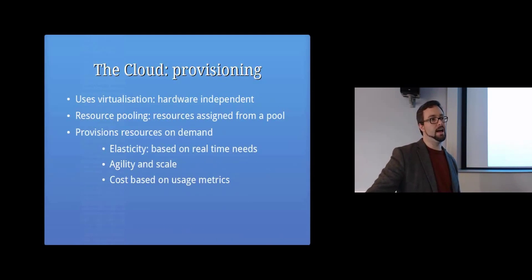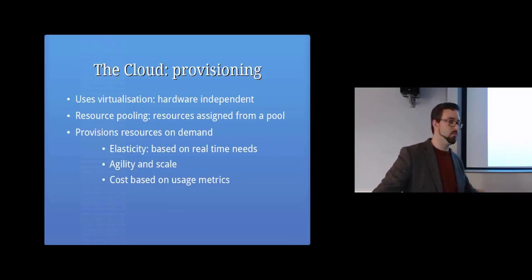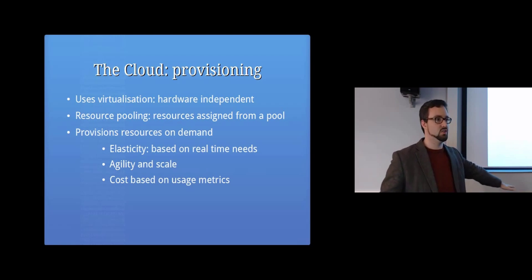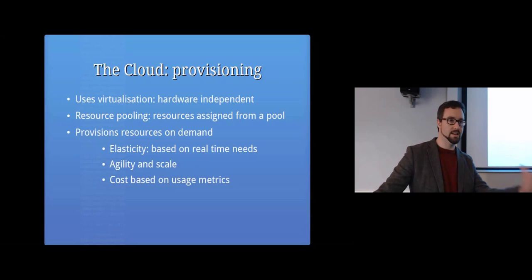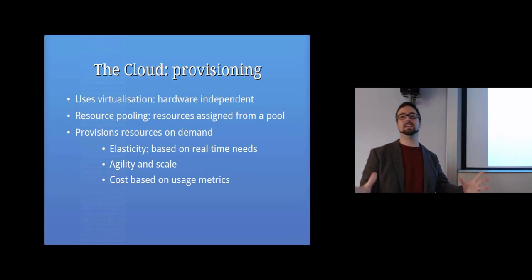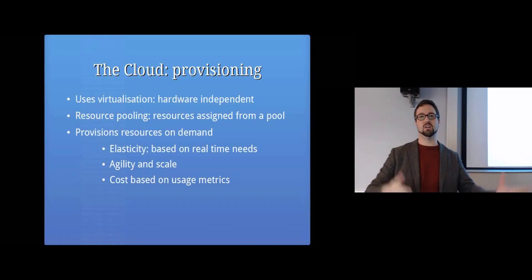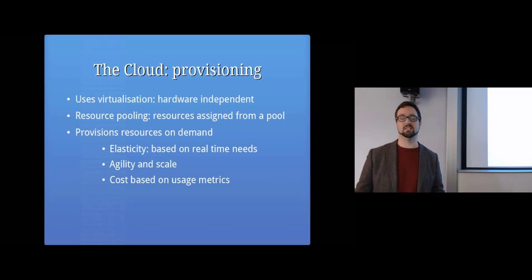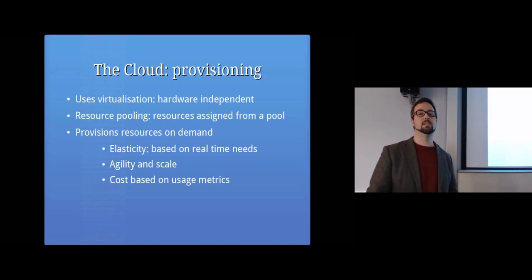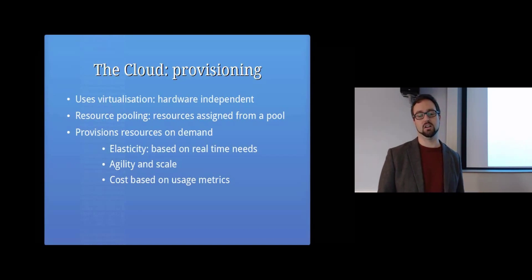Cloud computing is powerful because of virtualization - it's not dependent on specific hardware, it runs on top of it. It usually has resource pooling where massive amounts of servers are available, and your VM uses available resources as needed. It's provisioned on demand, which provides elasticity - you can say you need 5 million VMs and it'll fire them all up using Amazon's servers. You pay for what you use, and when you don't need them you're not paying as much. This lets you scale up and down really quickly and easily.